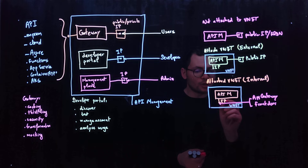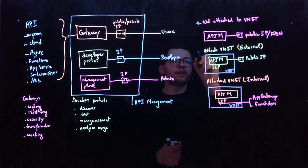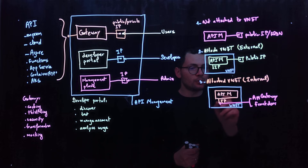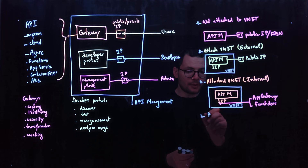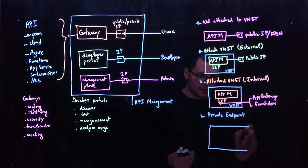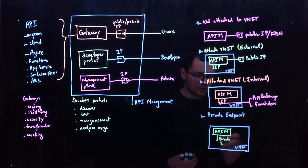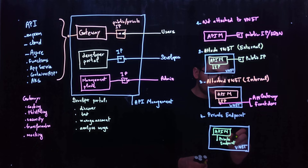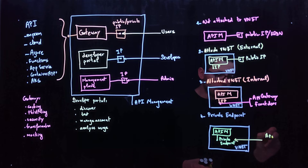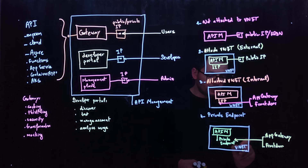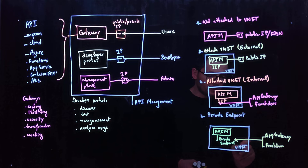There is also a fourth option using a private endpoint. With this configuration, your API management is still associated with a virtual network, but instead of just having a private IP address, it has a private endpoint injected into the virtual network. To expose services privately, you connect to the private endpoint. To expose them publicly, you can still rely on services like Application Gateway and Azure Front Door. Because you are using a private endpoint, you will also add a DNS zone to resolve the domain name of your private endpoint to the FQDN of the API management.